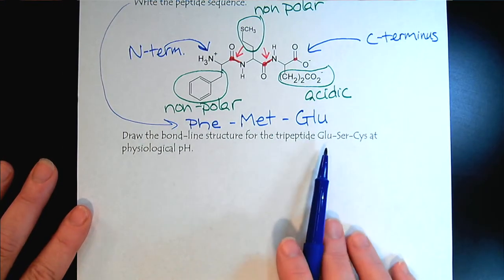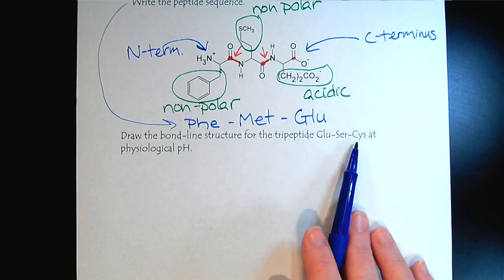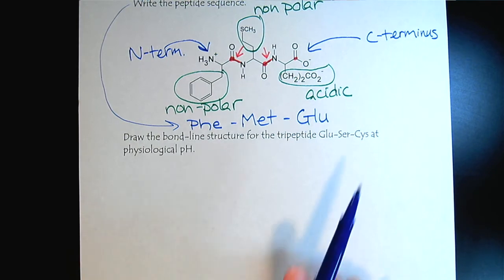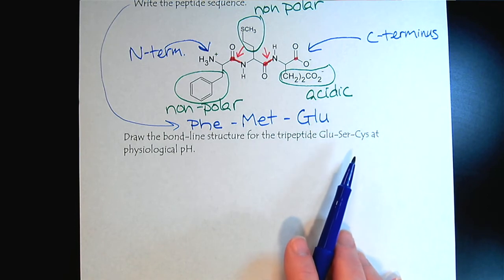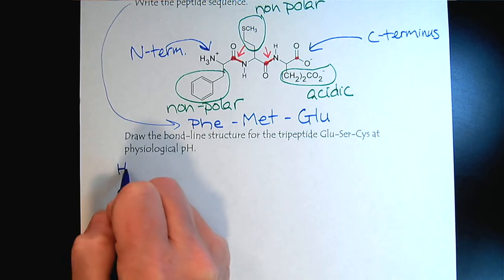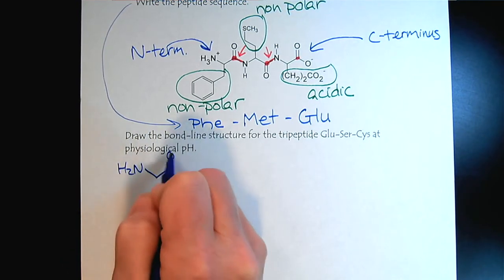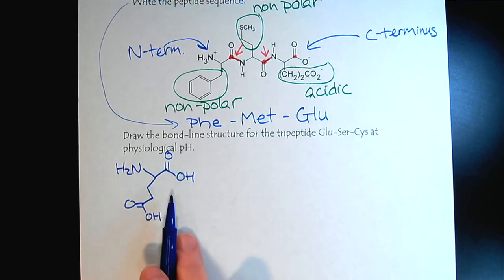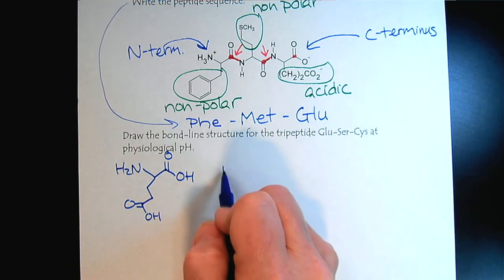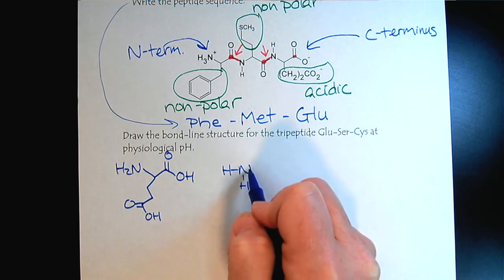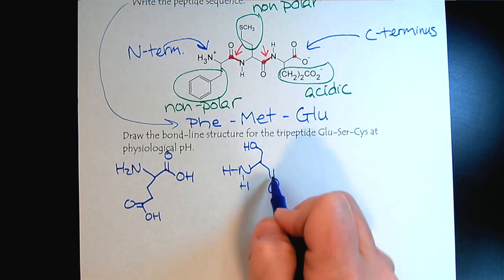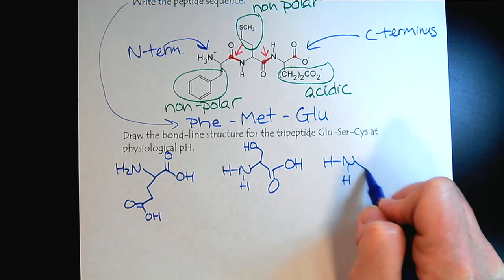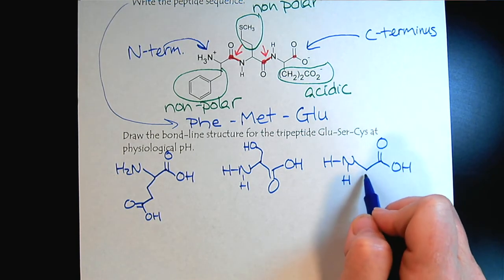Here we have a tripeptide sequence with glutamine, serine, and cysteine, and we want to look at them at physiological pH. For me, I think it's easier to start with the amino acids in their neutral form, because that's how we learned the reactions originally. So we look at our amino acid list, which you'll always have for quizzes and tests, and we draw the first one. There's glutamic acid right there, so there's our GLU. Now we'll bring in the serine, always drawing with the N-terminus to the C-terminus. Then we'll bring in cysteine, the last amino acid, and that has the thiol.